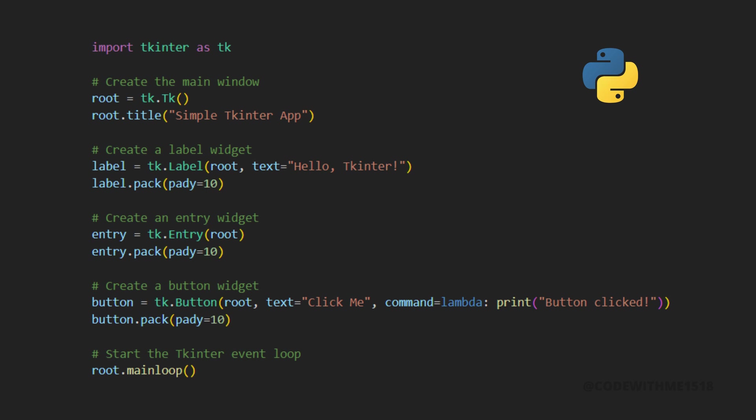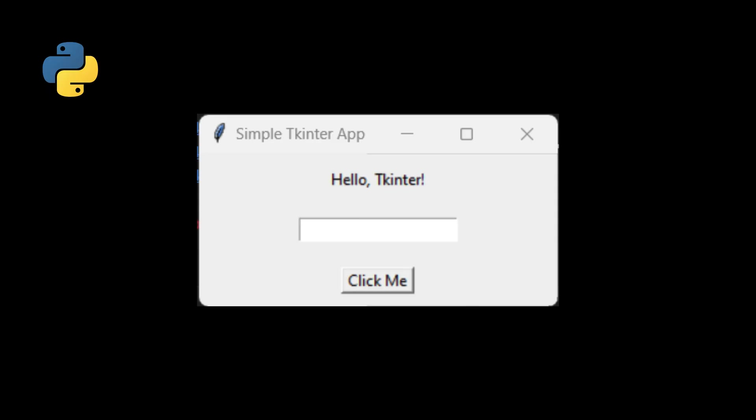Here, we've added a label, an entry field, and a button. When the button is clicked, it triggers a command that prints a message to the console.